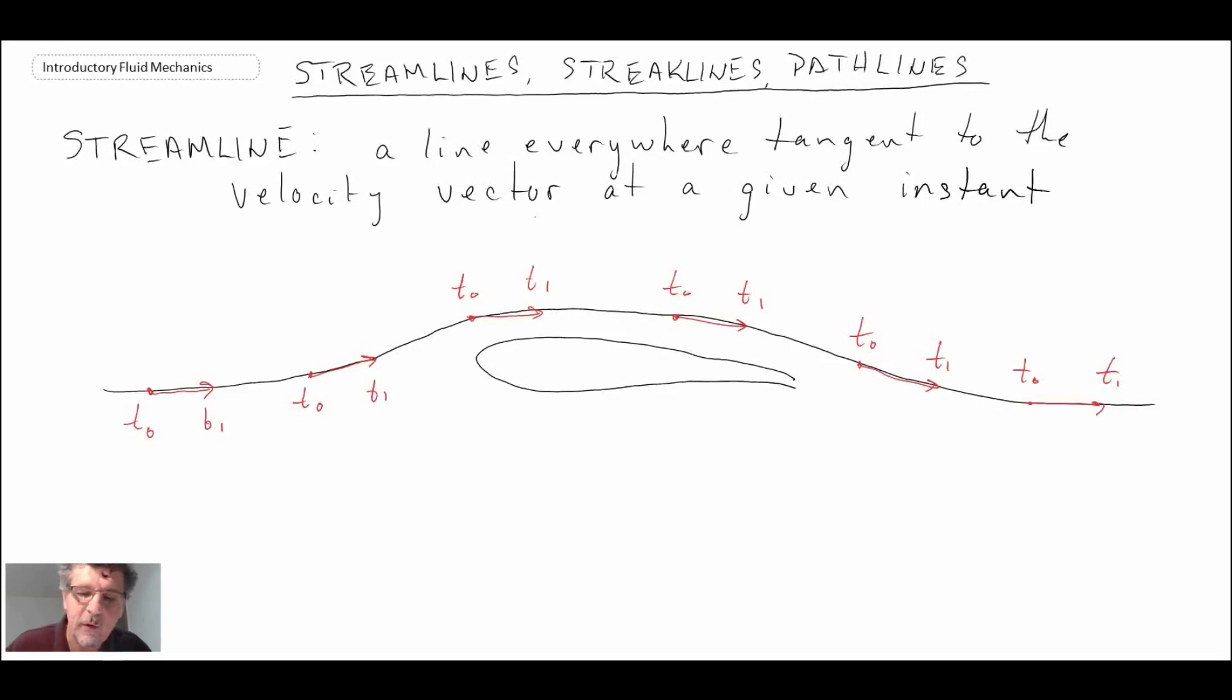The velocity vectors will always be tangential to the streamline itself. So here we have the condition where t1 is greater than t0. The next one that we'll take a look at is a streakline.